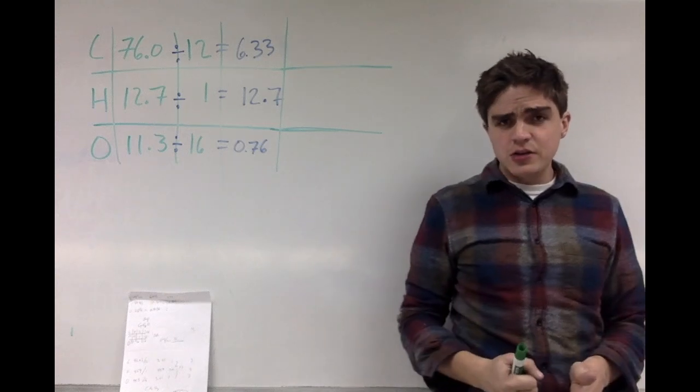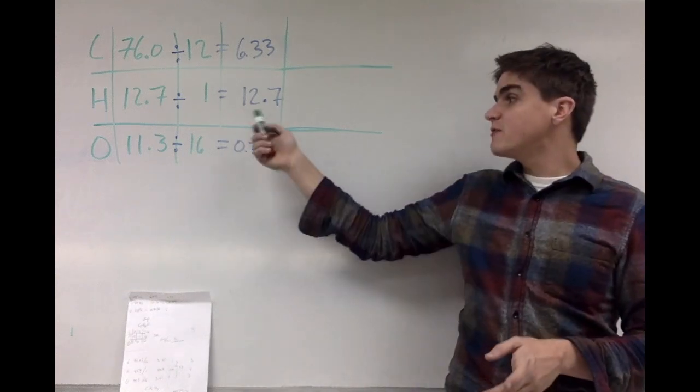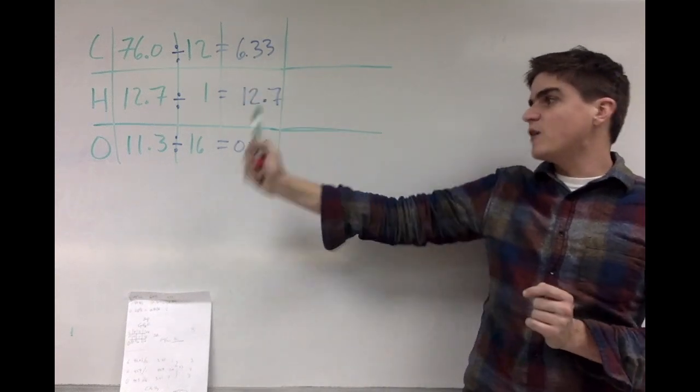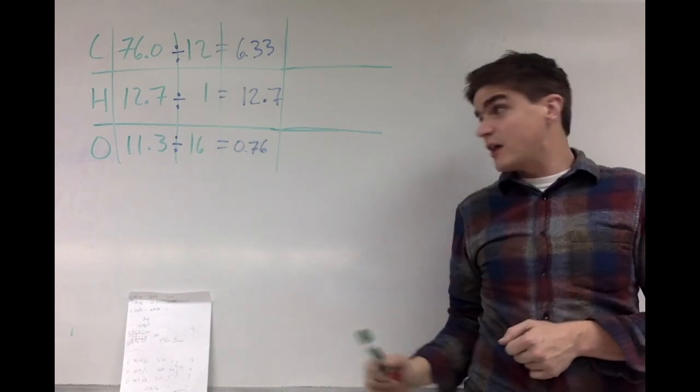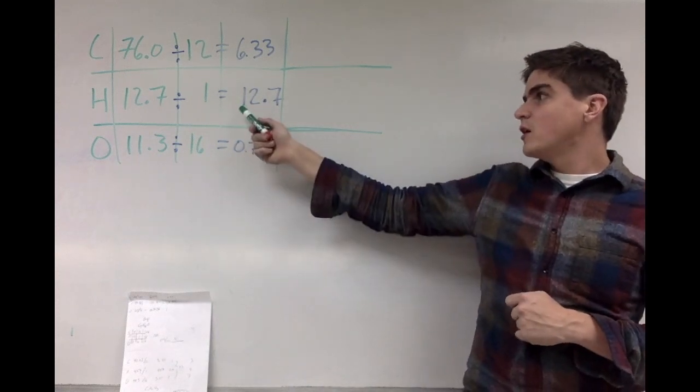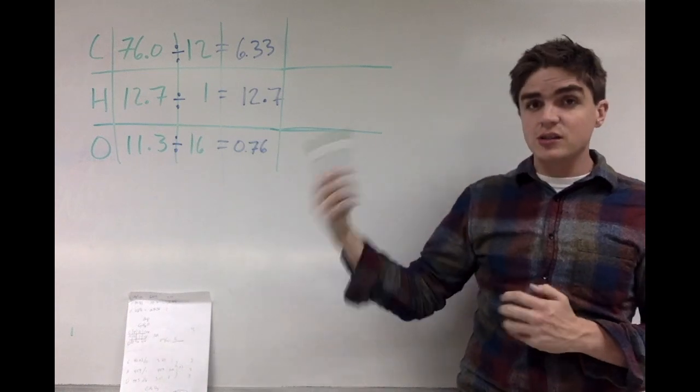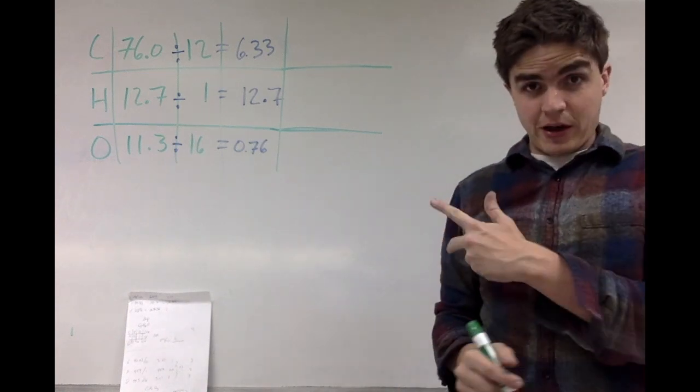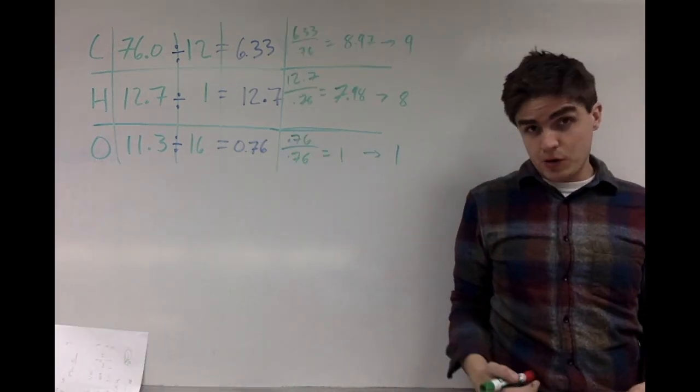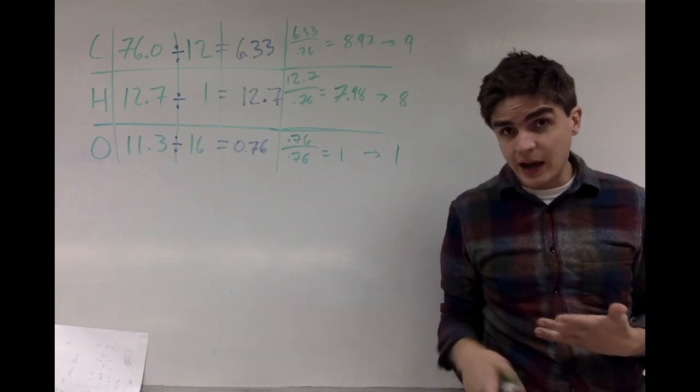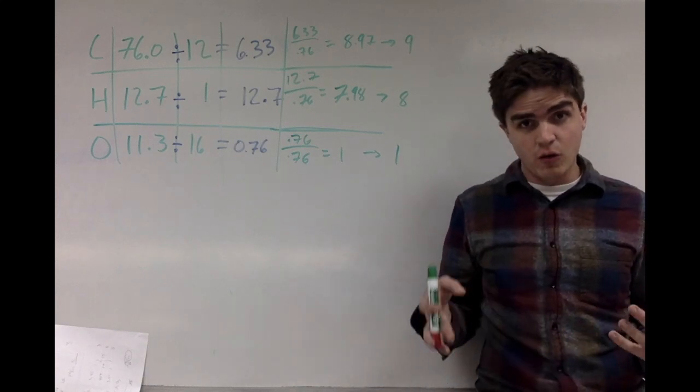Now the next step I need to do is I need to take these numbers and divide by the smallest number, 6, 12, and 0.7. I'm going to divide everything by 0.76, so 0.76 divided by 0.76, or 12.7 divided by 0.76, etc. So let's do that really fast. And I get my empirical formula just like I've been doing. I get C9H8O1.